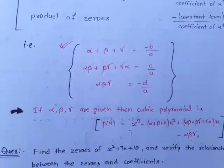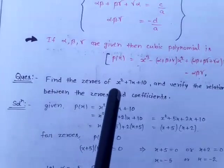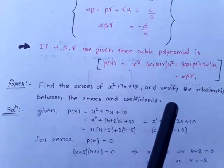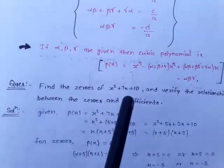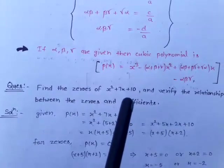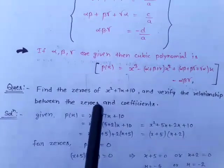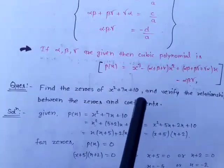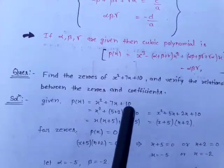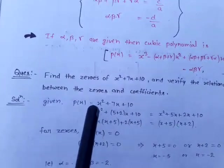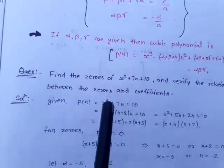Now we move to some questions related to this. The first question is: find the zeros of x² + 7x + 10 and verify the relationship between the zeros and coefficients. A quadratic polynomial is given and we need to find the zeros and verify the relationship between zeros and coefficients. First, we find the zeros of this quadratic polynomial, where p(x) = x² + 7x + 10.